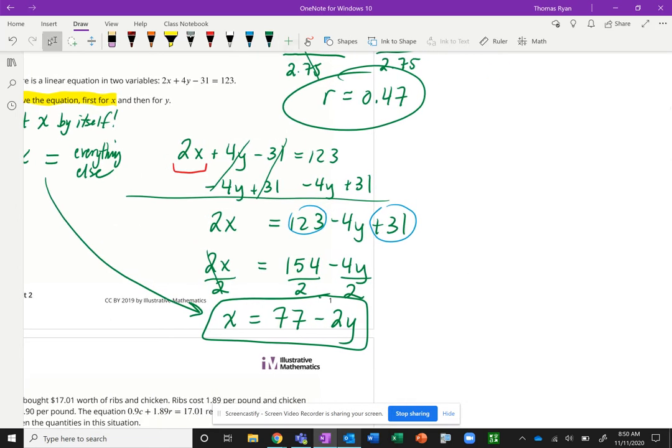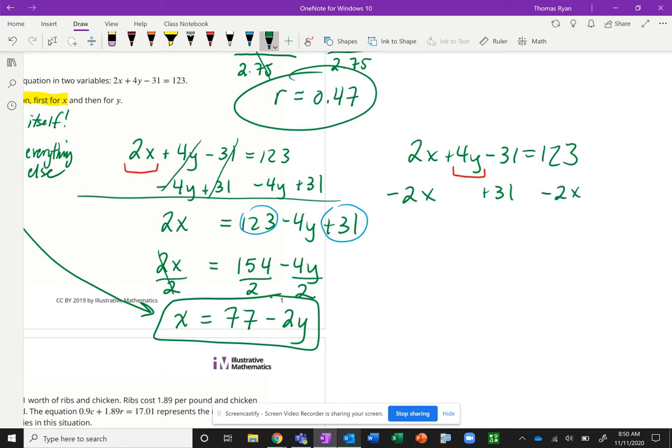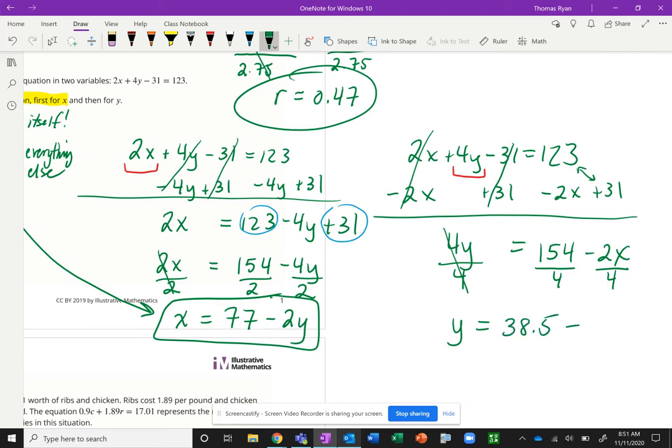Now we're going to do the same thing, except we're going to solve for Y. 2X plus 4Y minus 31 equals 123. Think about what we want to solve for, we want to solve for this Y. How do we cancel out or undo a 2X? We got to subtract it. We got to add a 31, which means on this side we also need to minus 2X. We got 154 minus 2X. And once again, we want to get a single Y by itself. When we say solve for Y, get Y equals everything else, divide each piece by 4.